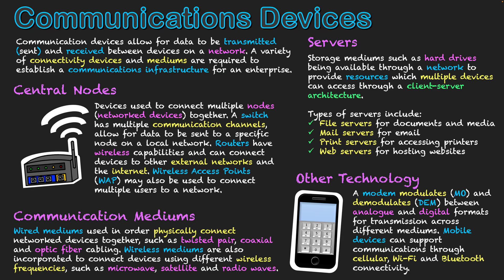This video has given an understanding of different types of communications devices — how we set up networks by establishing central nodes such as switches and routers, then connecting things using communications mediums, which may be wired using twisted pair or optic fiber cabling, or wireless using Wi-Fi radio signals, or over long distances using microwave and satellite technology. We receive data from hosts through servers, which store things on hard drives. Other technology includes modems for changing signal formats when sending down specific mediums, and mobile phones with their many connectivity mediums and communication apps.